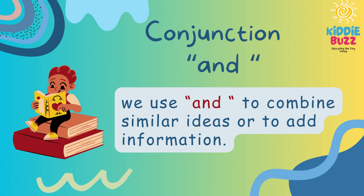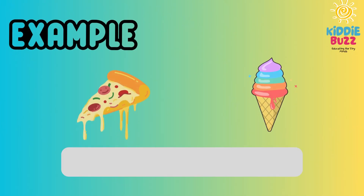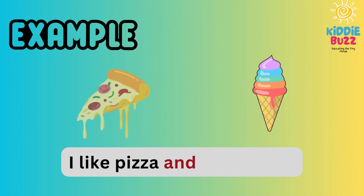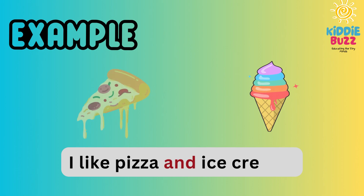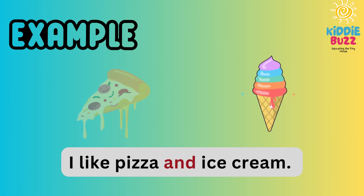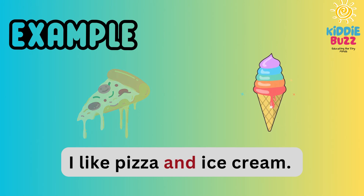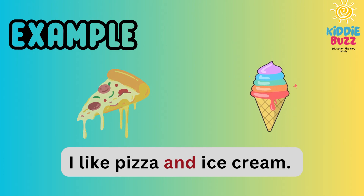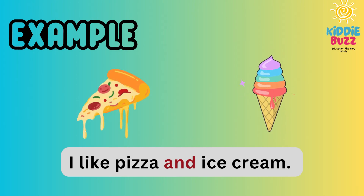Conjunction AND. We use AND to combine similar ideas or to add information. For example, 'I like pizza and ice cream.' In this sentence, the conjunction used is AND. It is connecting two words, pizza and ice cream, together.